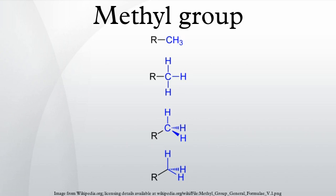Free radical reactions: when placed in benzylic or allylic positions, the C–H bond strength decreases and the reactivity of the methyl group increases. One manifestation of this enhanced reactivity is the photochemical chlorination of the methyl group in toluene to give benzyl chloride.